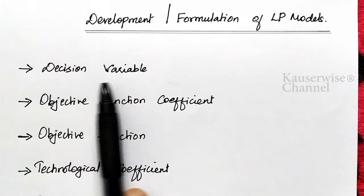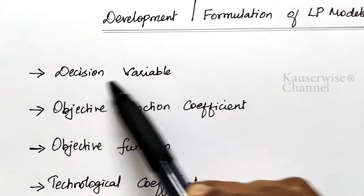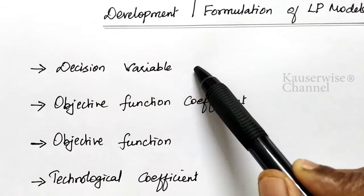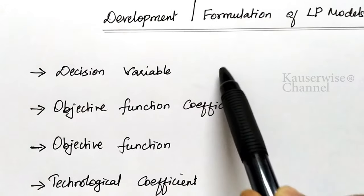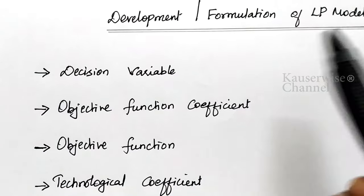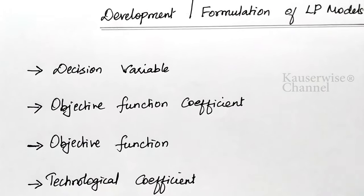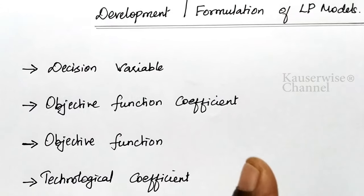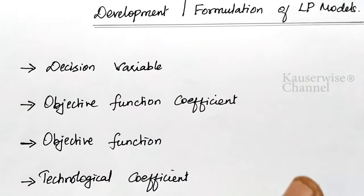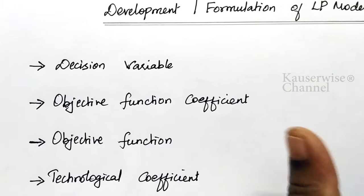Let us see all these things briefly, then we will see the problem for better understanding. The first one is decision variable — it is used to represent the level of achievement of a particular course of action. For example, if you want to produce two different products like P1 and P2, how many number of P1 and how many number of P2? That is the decision variable to attain our objective.